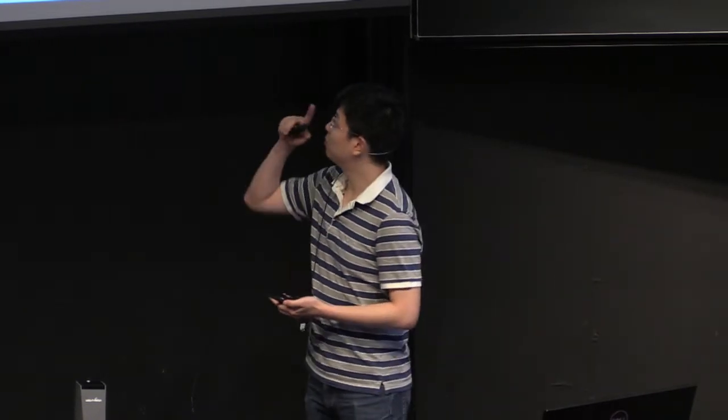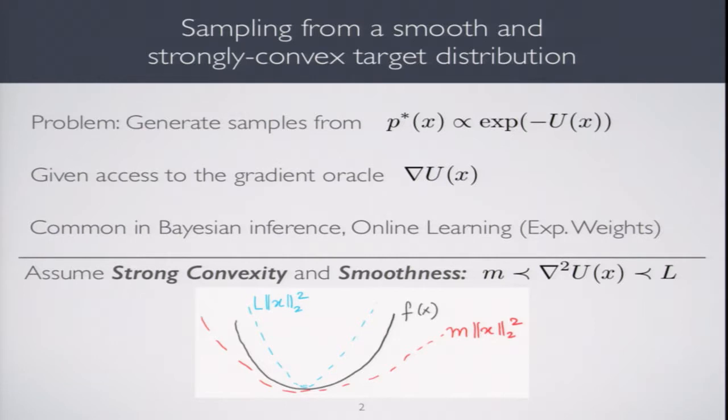Here's the motivation. We are trying to sample from distribution p*, which can be written as e to the power of minus u of x for some potential function. We assume we can compute the gradient of u of x. Furthermore, we assume u of x is m strongly convex and l smooth, meaning l Lipschitz gradients. This is common in Bayesian inference and online learning.